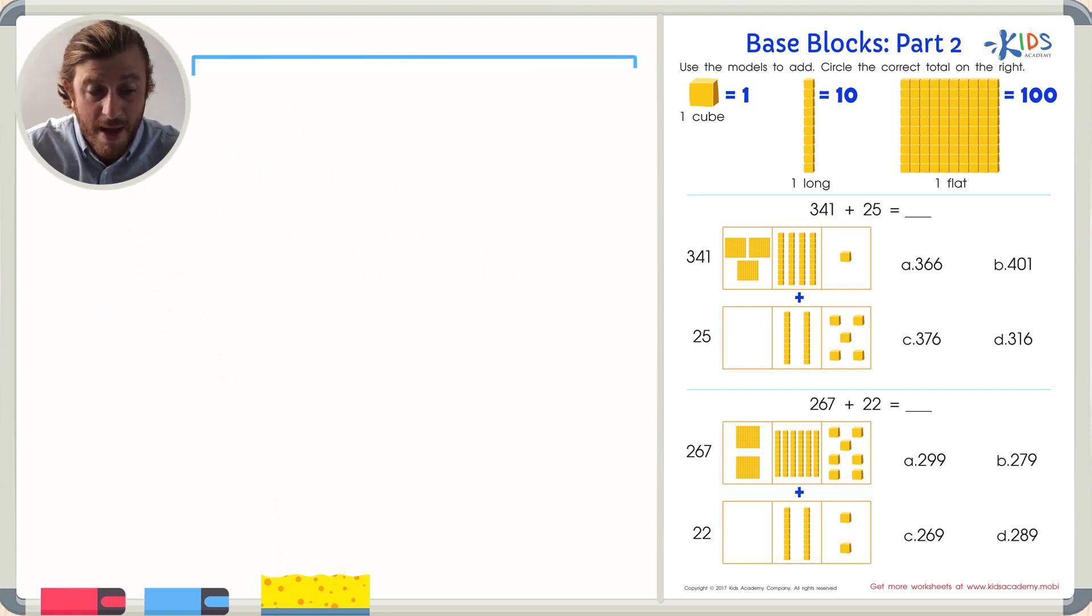First thing I like to do is make a place value chart. This is going to help me keep track of all the numbers I put together and then we'll just be able to read the number for the right answer. First, let's make an O for the ones place.